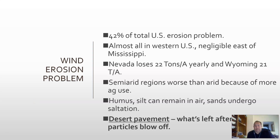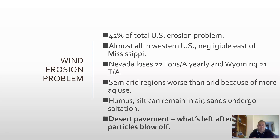About 42% of the total U.S. erosion problem is wind erosion, almost all in the western United States because it's dry and not humid. Nevada loses 22 tons per acre a year and Wyoming is around 21 tons per acre a year — that's of topsoil being pulled up and disappearing. What's interesting is that semi-arid regions are worse than arid regions because there's more agricultural use. Arid areas are so dry that people don't do farming there, but semi-arid areas are good enough for farming, and because of that and being semi-arid, you end up having a huge problem with wind erosion.